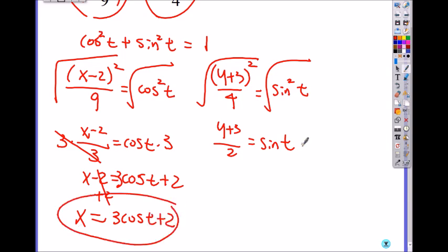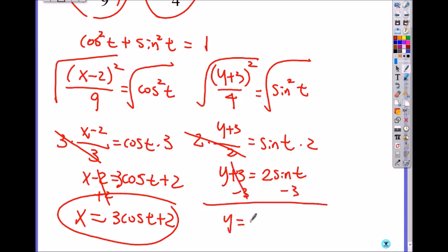And here, multiply by 2 on both sides to get rid of the denominator. y plus 3 is 2 times sine of t. And then, now you subtract 3 to solve for y, so it's 2 sine of t minus 3. So here's your parametric equation, x and y.